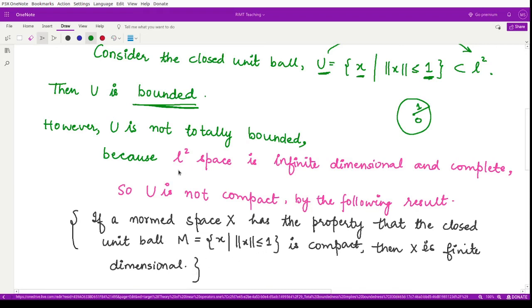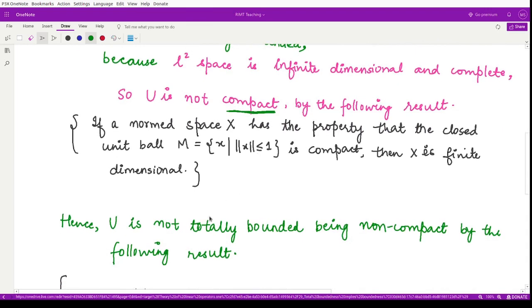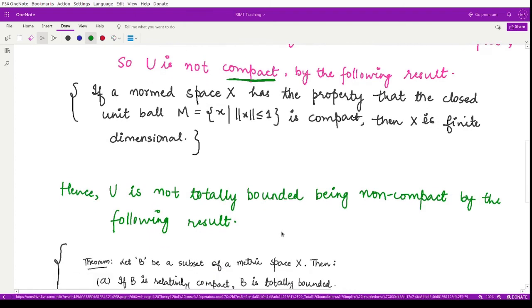because our space l2 is infinite dimensional and complete, the set U cannot be compact. And if this cannot be compact, therefore it is not totally bounded, because compactness implies total boundedness. So we can say U is not totally bounded because it is not compact.